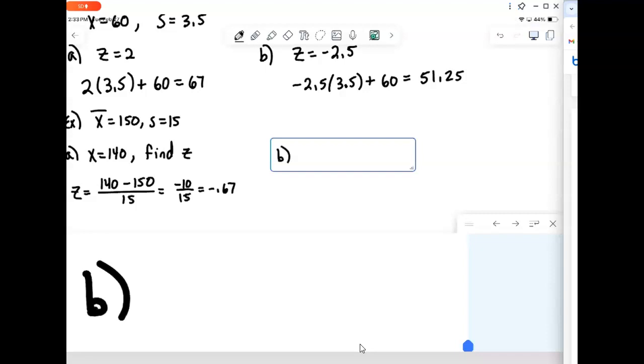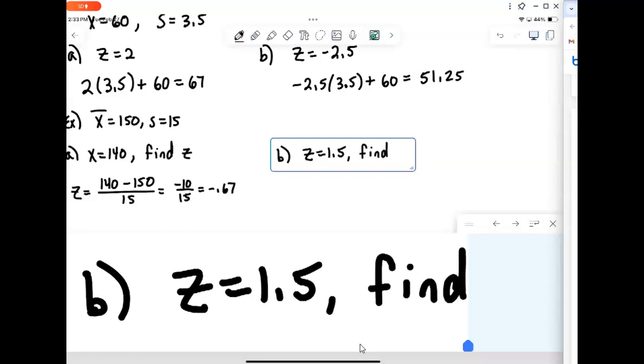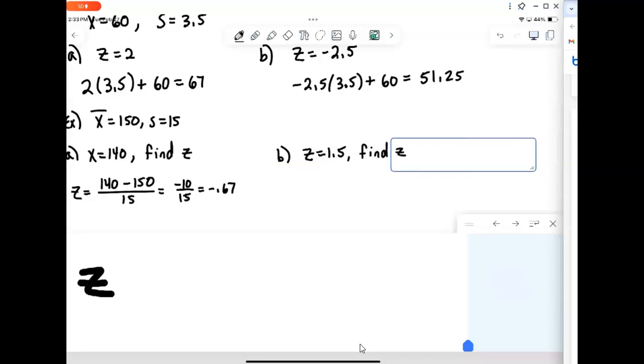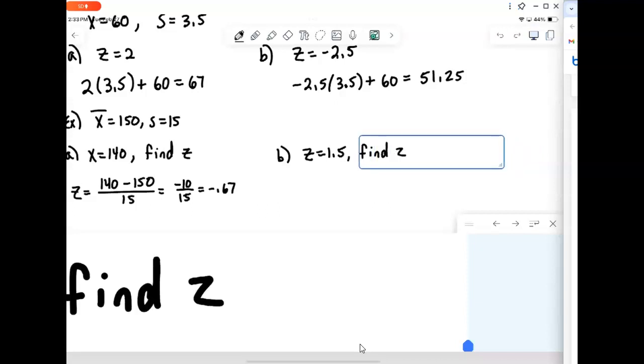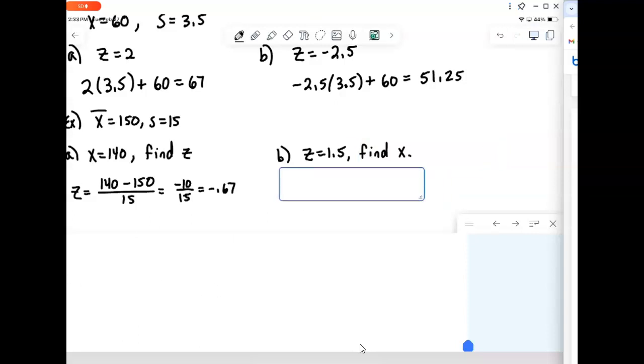We can instead be asked the other way. Given a z-score, say a z-score of 1.5, we could be asked to find the data value. So now we're going the other way. We'll find x. We already have z. So we want to find x.